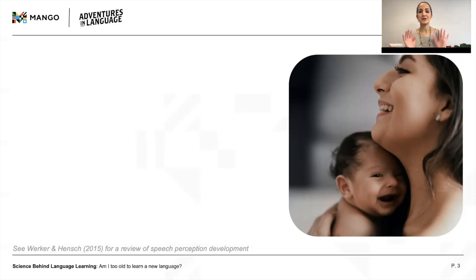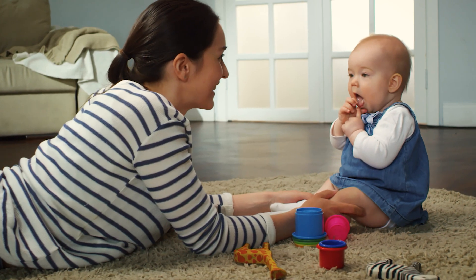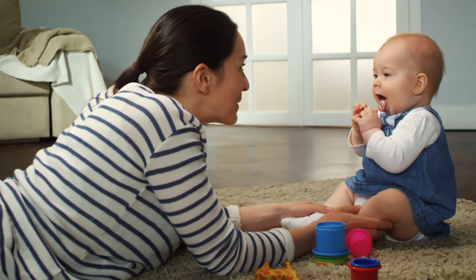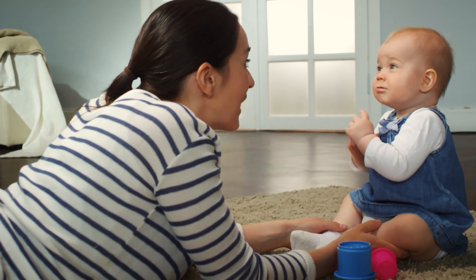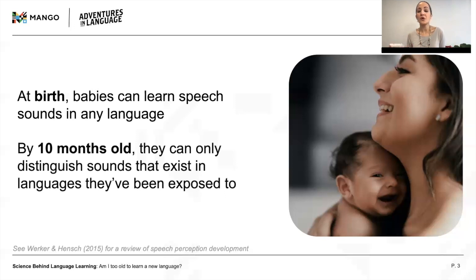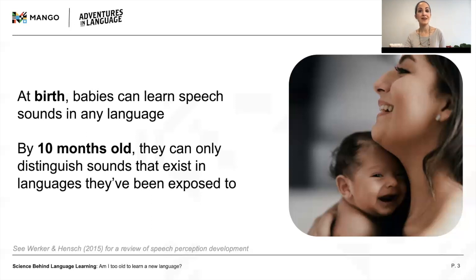The effects of age start to emerge pretty early in the language learning process, even for first language learning. Babies are born able to distinguish speech sounds in any language, but by about 10 months old, they can only distinguish sounds that exist in the languages they've been exposed to. But what would happen if they weren't exposed to any languages? Is there a point at which it's just too late to learn a language? Enter the critical period hypothesis.